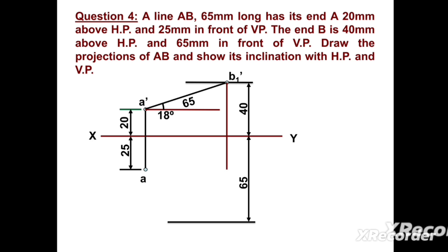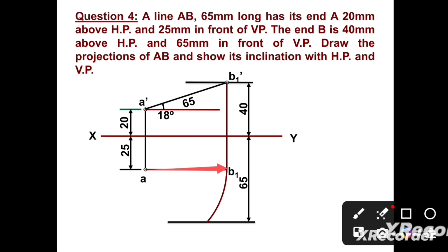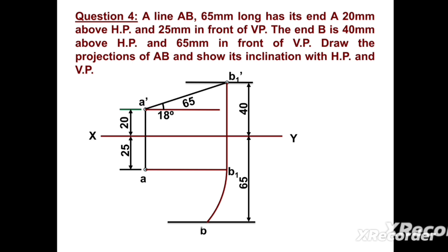Now we can draw a vertical line passing from B1' and a horizontal line passing from point A — this intersection point is B1. Now we can take radius AB1 and draw an arc in the clockwise direction to get point B. We can draw a vertical line passing from B to get the intersecting point B'. Now we can join A' and B' — the line A'B' is the elevation or front view.